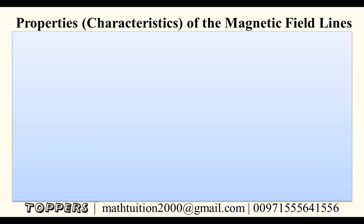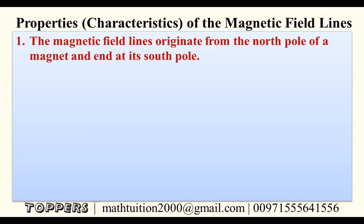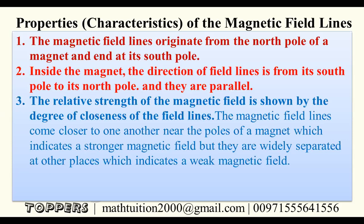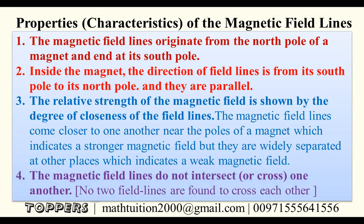Properties or characteristics of magnetic field lines: First, magnetic field lines originate from the north pole of a magnet and end at its south pole. Second, inside the magnet the direction of field lines is from its south pole to its north pole, and they are parallel. Third, the relative strength of the magnetic field is shown by the degree of closeness of the field lines — they come closer near the poles indicating a stronger field, and are widely separated at other places indicating a weak field. Fourth, magnetic field lines do not intersect or cross one another.